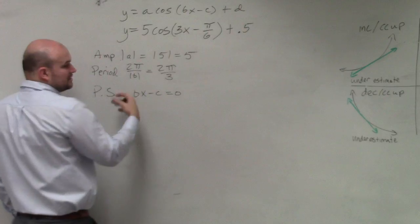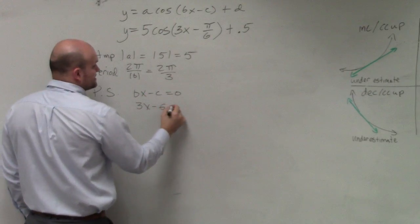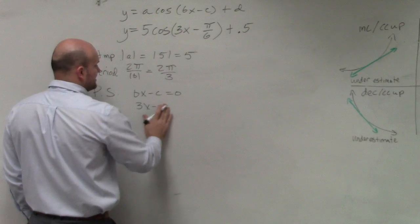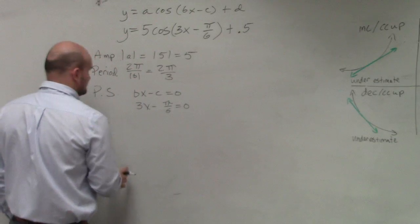So whatever's inside your function, set that equal to 0 and solve. So we have 3x minus—sorry, 3x minus π over 6 equals 0. Actually, I'm actually going to do this over here.